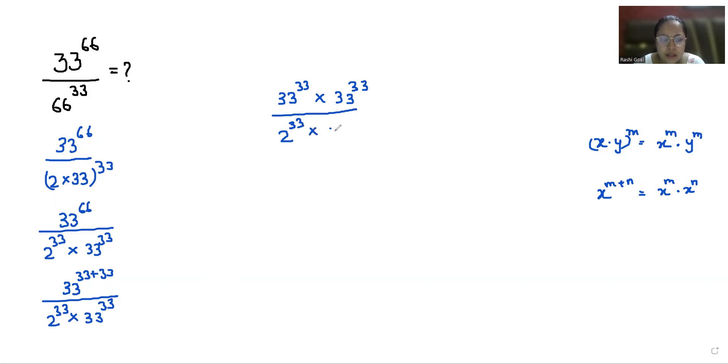Times 33 power 33. Now we can cancel out 33 power 33 from numerator and denominator, so what is left is 33 power 33 by 2 power 33. Another exponent rule: x power m by y power m we can write